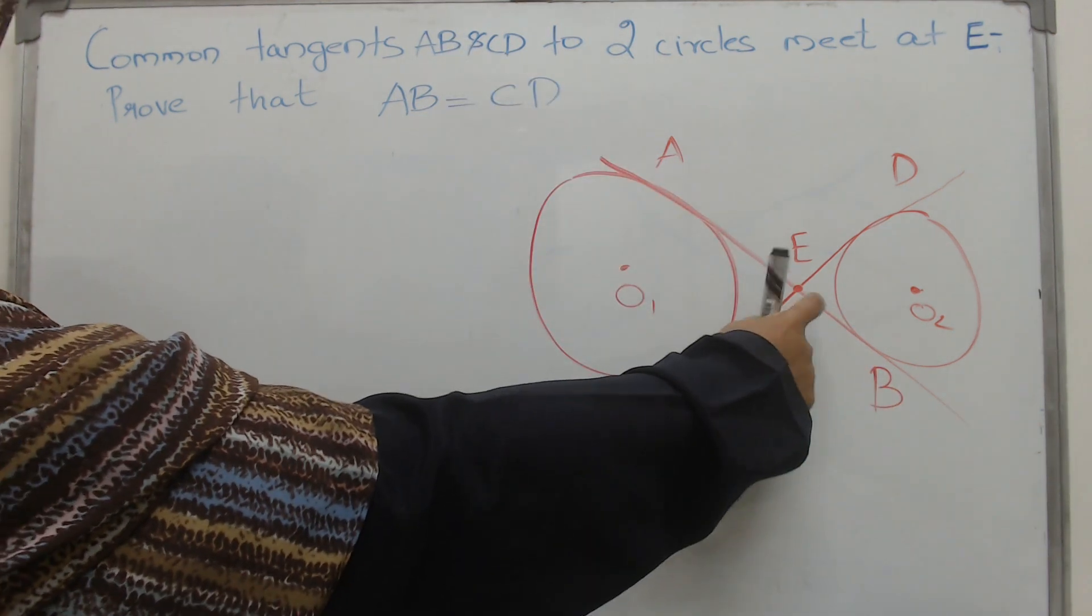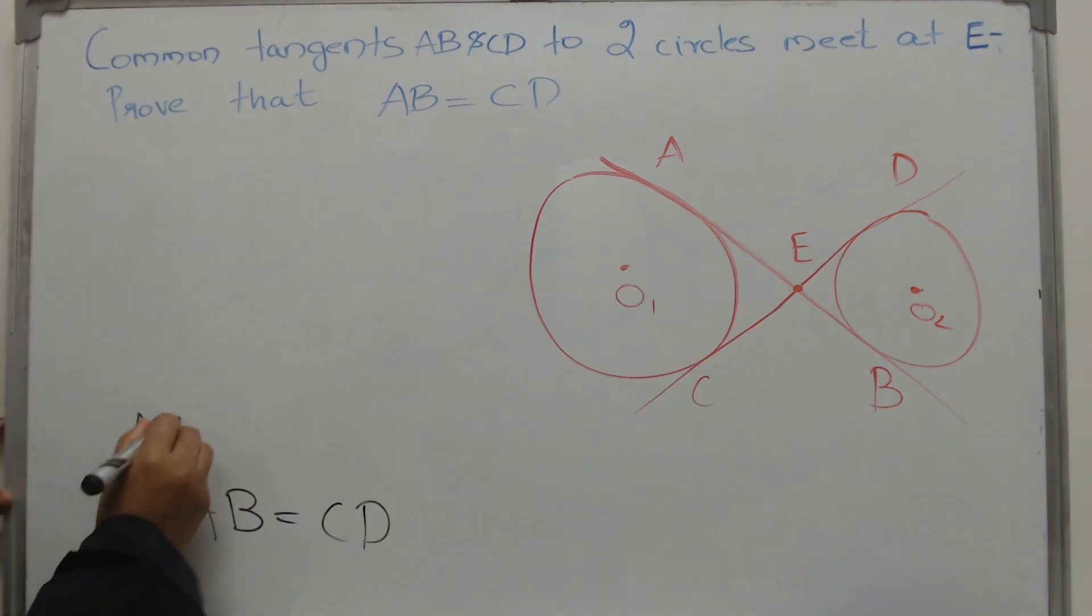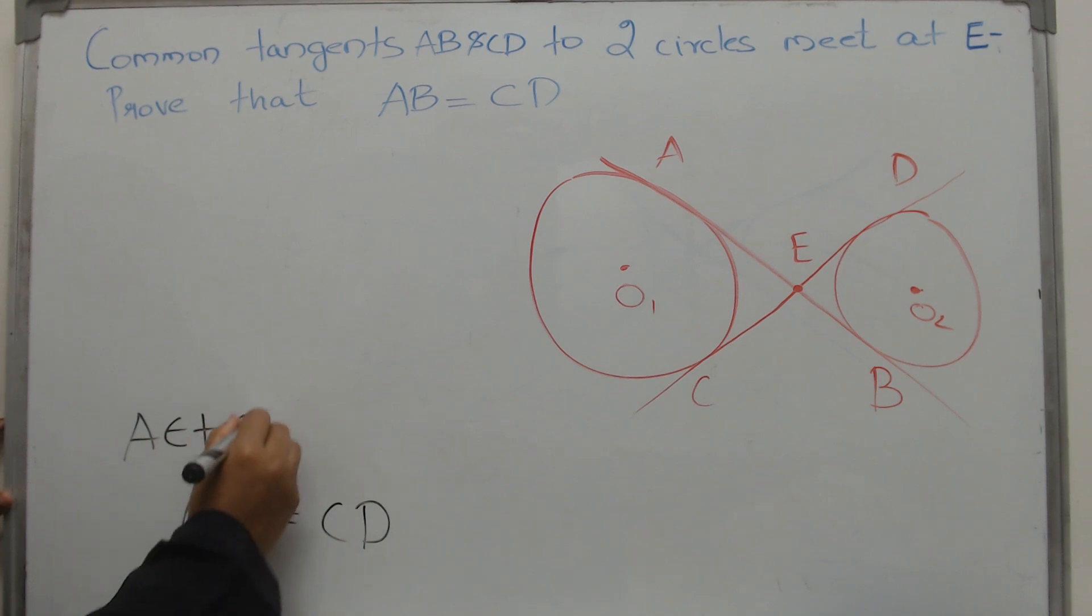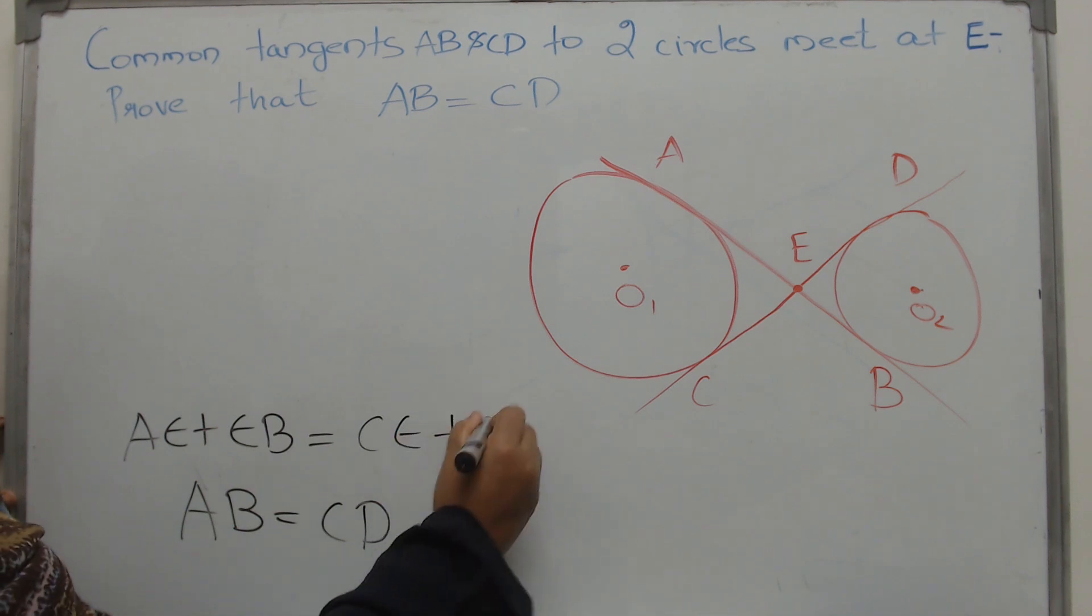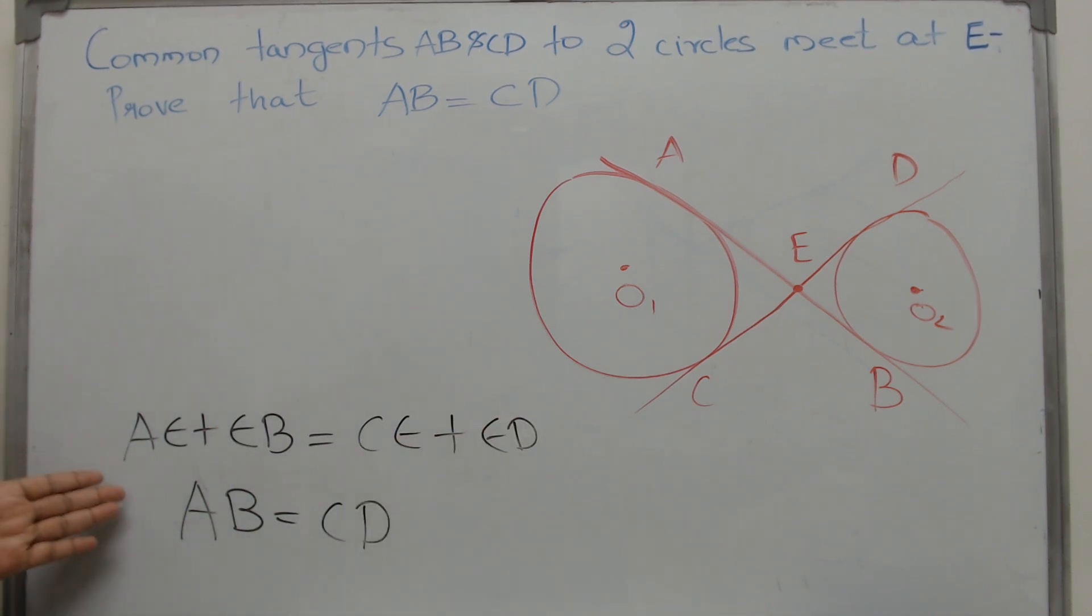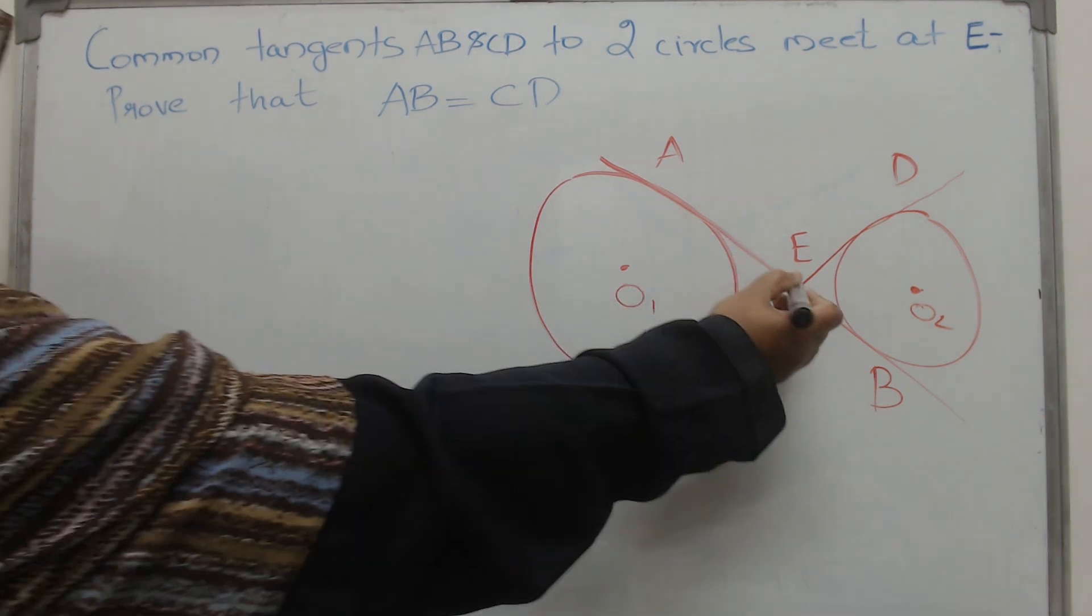Here AB, you see the split here, or in other words what we actually have to prove is that AE plus EB is equal to CE plus ED. That should be enough right? So how do we proceed? Where do we start from? Look at the point E.